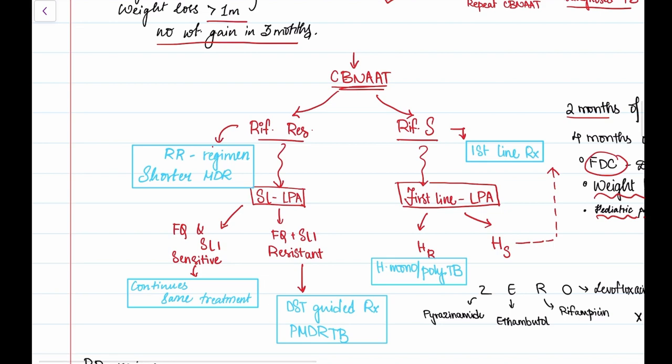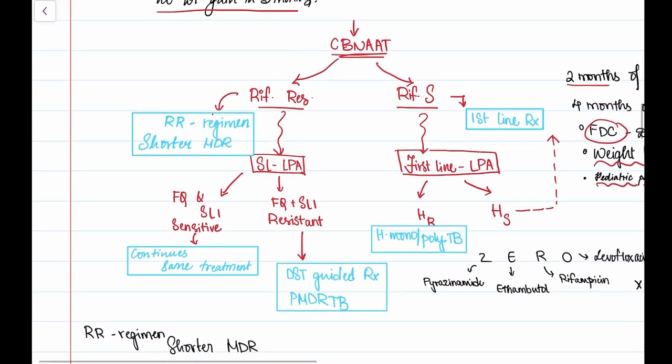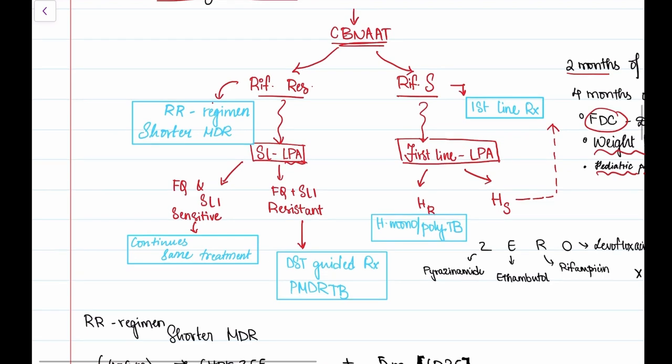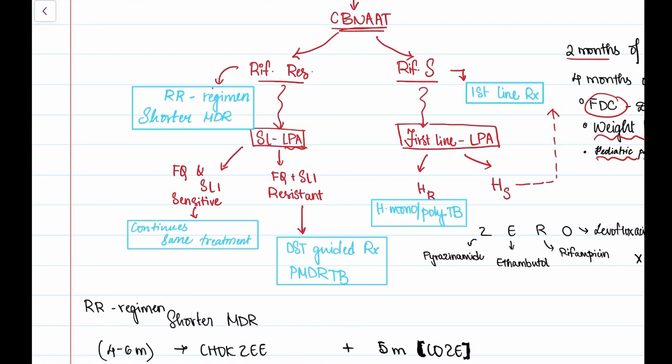What about if it's rifampicin resistant? Then we give a rifampicin resistant regimen, that is the shorter MDR. If it's resistant, we again send for a second line line probe assay where we see if it's fluoroquinolone sensitive or resistant. If it is sensitive, we continue with the same treatment. But if it's resistant, we give a drug sensitivity testing guided treatment.